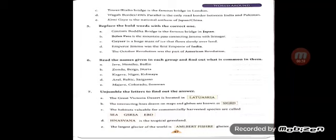Question five: replace the bold letter with the correct one. First: the Gautam Buddha Bridge is the famous bridge in India — replace Japan with India. Second: Bolan Pass connects Jammu and Srinagar — it is not Bolan, it is Banihal Pass, B-A-N-I-H-A-L. Third: a geyser is a huge mass of ice that flows slowly over land — it is not geyser, it is glacier. Fourth: Emperor Jimmu was the first emperor — replace India with Japan. Fifth: the October Revolution was part of the American Revolution — replace American with Russian.